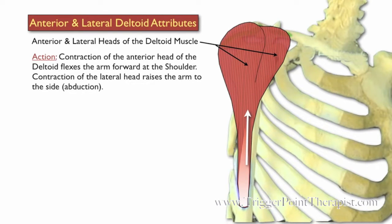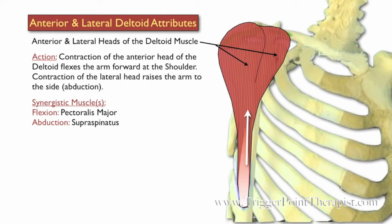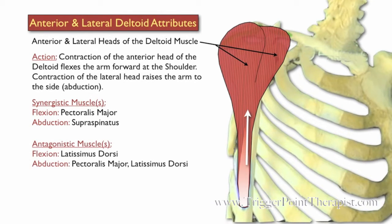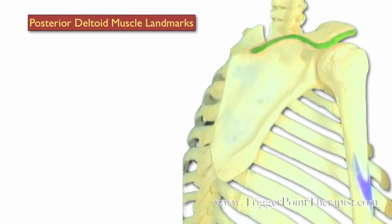Contraction of the anterior head of the deltoid flexes the arm forward at the shoulder joint, whereas contraction of the lateral head raises the arm to the side — abduction. Synergistic muscles include the pectoralis major for flexion, and the supraspinatus for abduction. Antagonistic muscles for the deltoid: for flexion, the latissimus dorsi; and for abduction, the pec major and the latissimus dorsi.